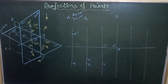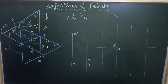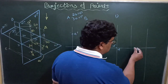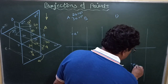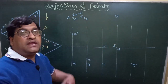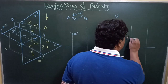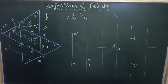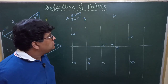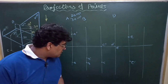A point that is 30 mm below HP and 20 mm behind VP: the front view is drawn 30 mm below the XY line. Since it is behind VP, as per the six lines, the top view goes above the XY line — 20 mm above. In this manner you can draw the projections of points in any quadrant.